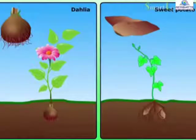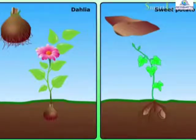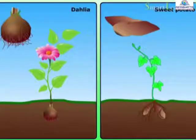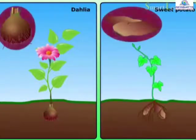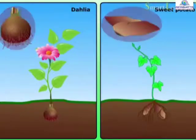The roots of some plants can also give rise to new plants, for example, roots of a dahlia and sweet potato.